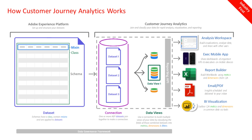Once connections are established, we create data views. Those are based on data connections or data sets that have been combined or stitched together. Data views enable you to define all your dimensions and metrics available in Analysis Workspace for analysis. Data views let you change schema settings without re-implementing anything for CJA. For example, you can change a component from a metric to a dimension and vice versa.